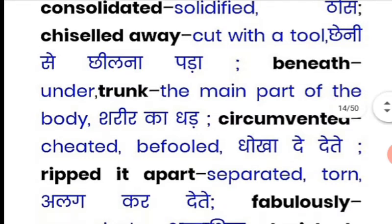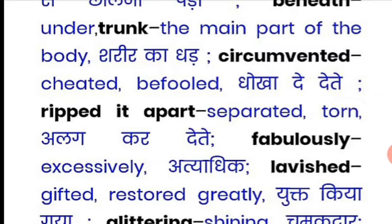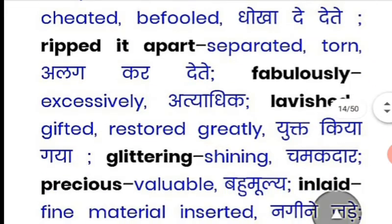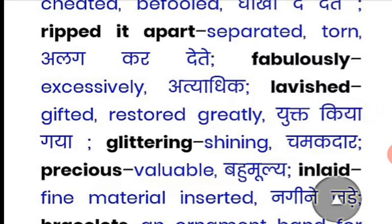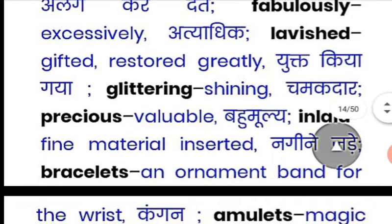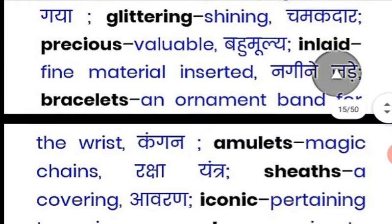'Circumvented' means to cheat or befool someone. 'Ripped apart' means to separate or peel off something. 'Fabulously' means excessively, in very large measure. 'Lavished' means to gift generously. 'Restored' means greatly improved or put back in order. 'Glittering' means shining. 'Precious' means valuable. 'Inlet' means a fine material inserted into something — a decorative piece fitted in.